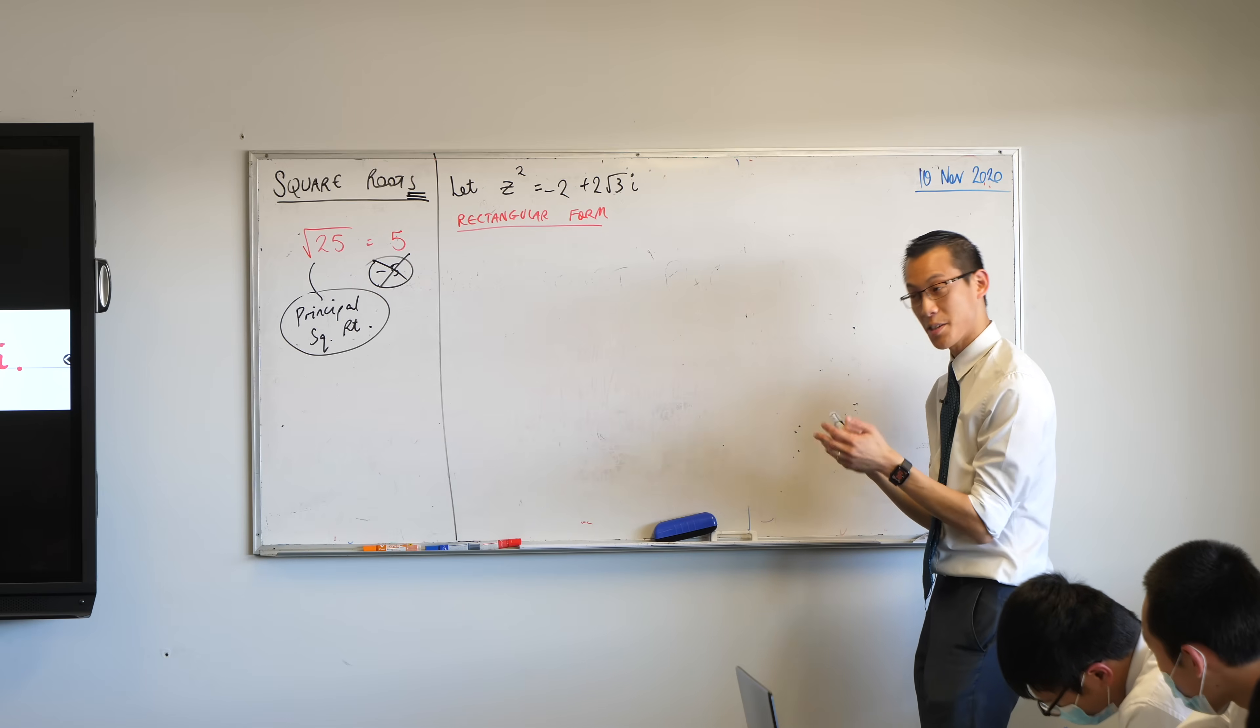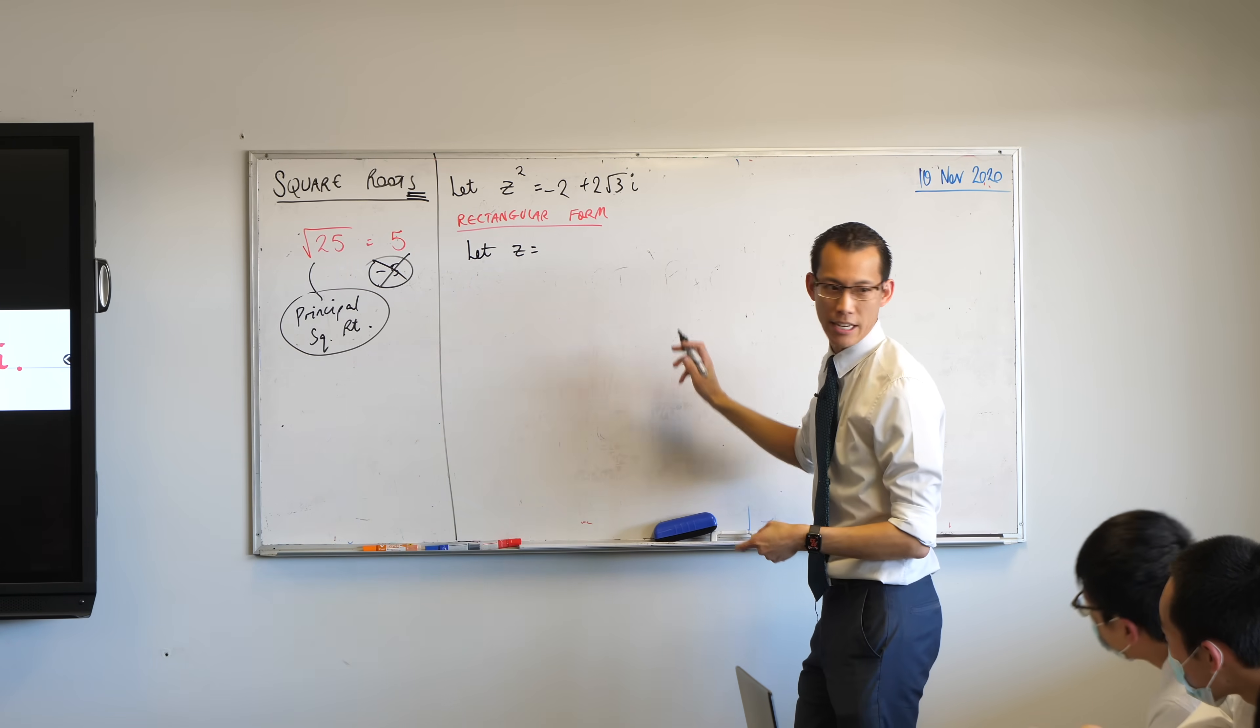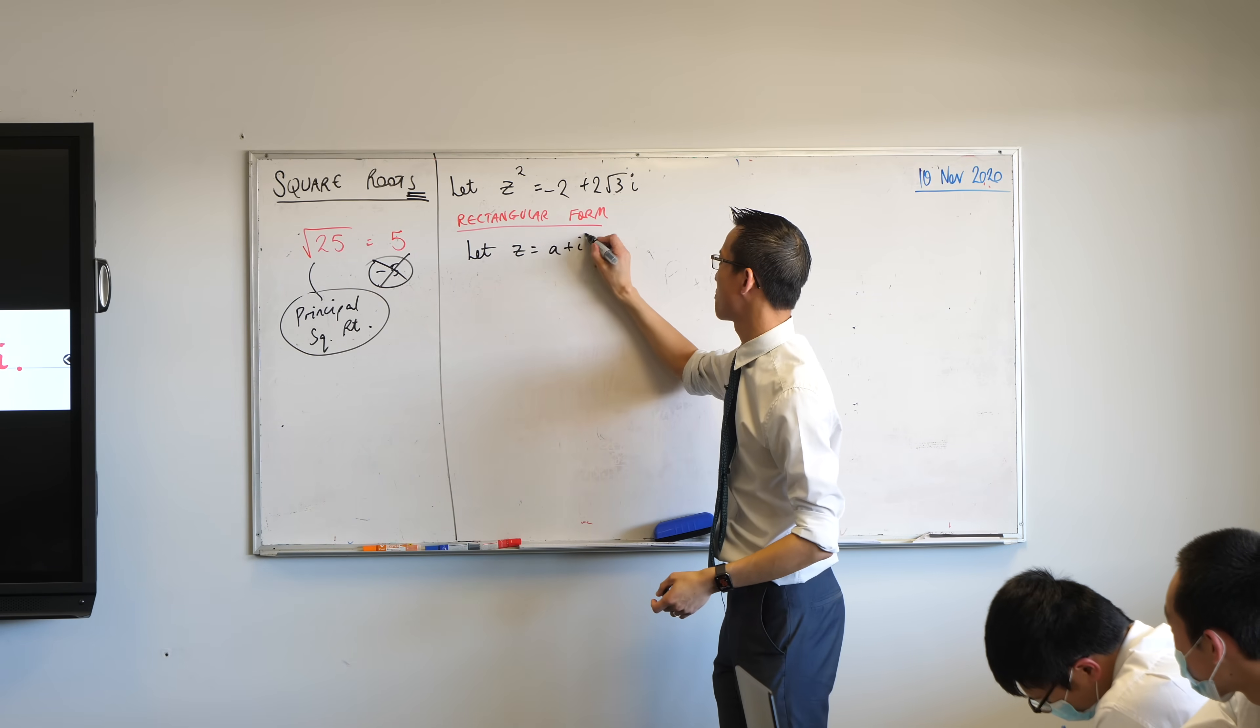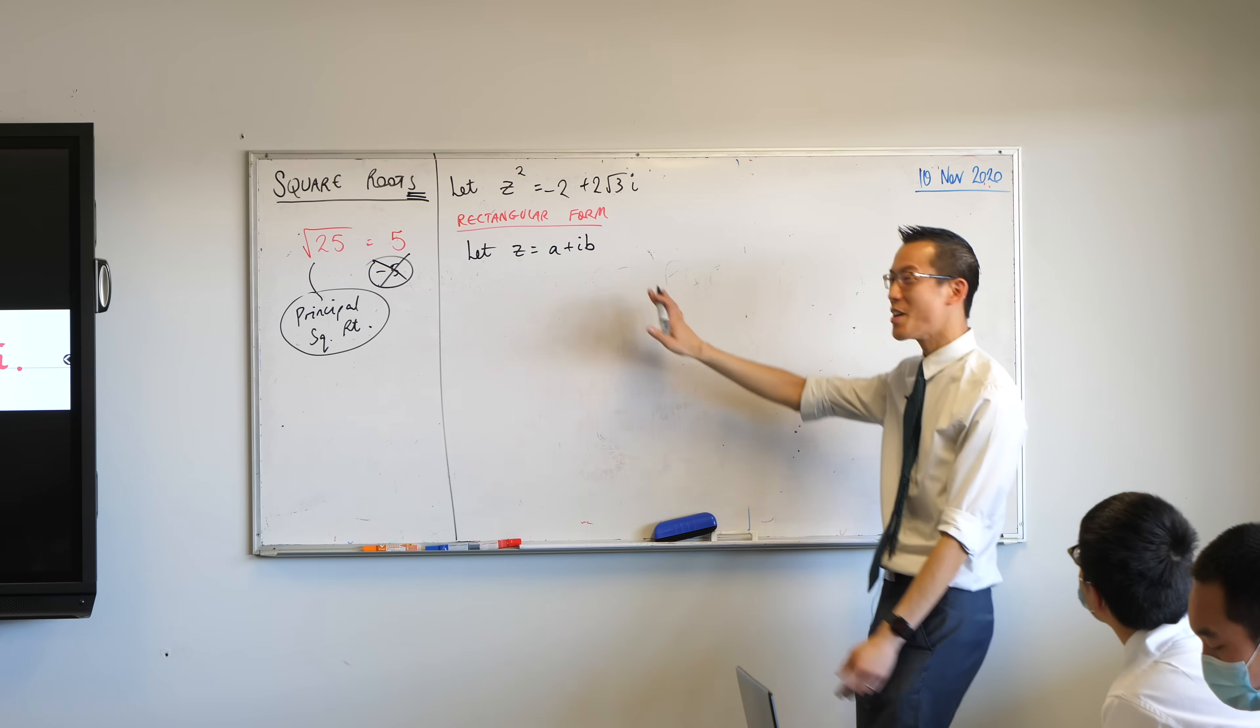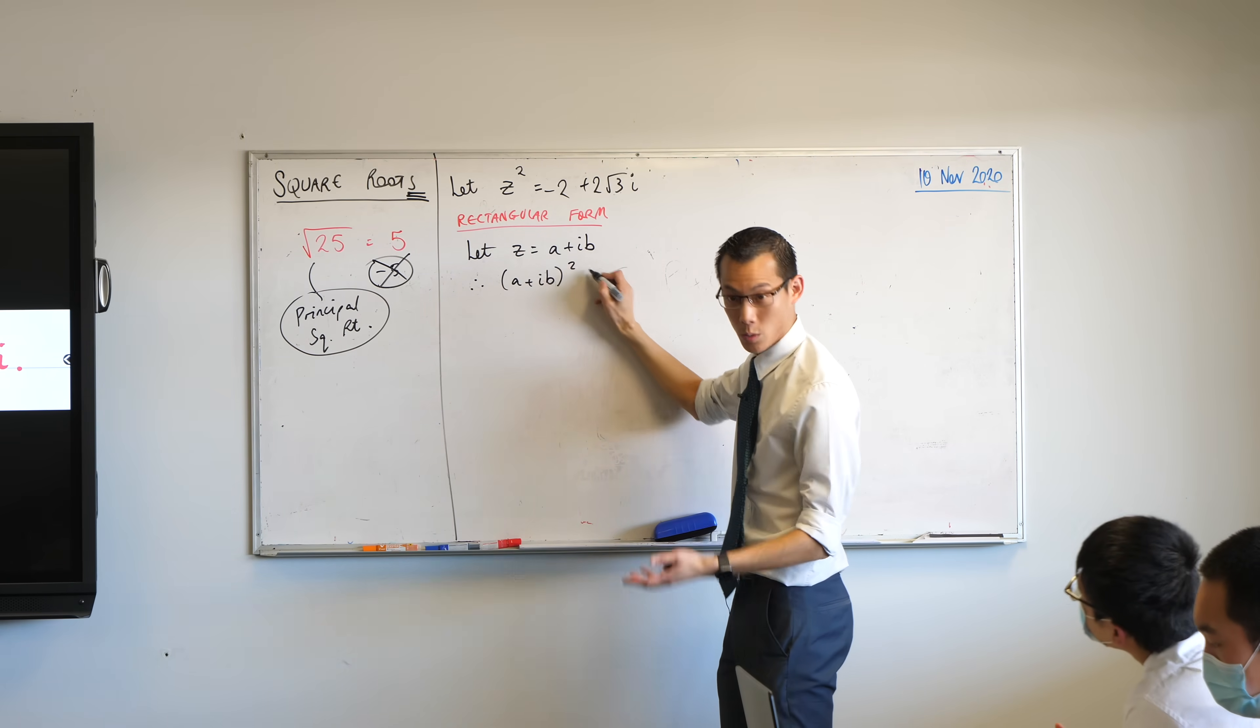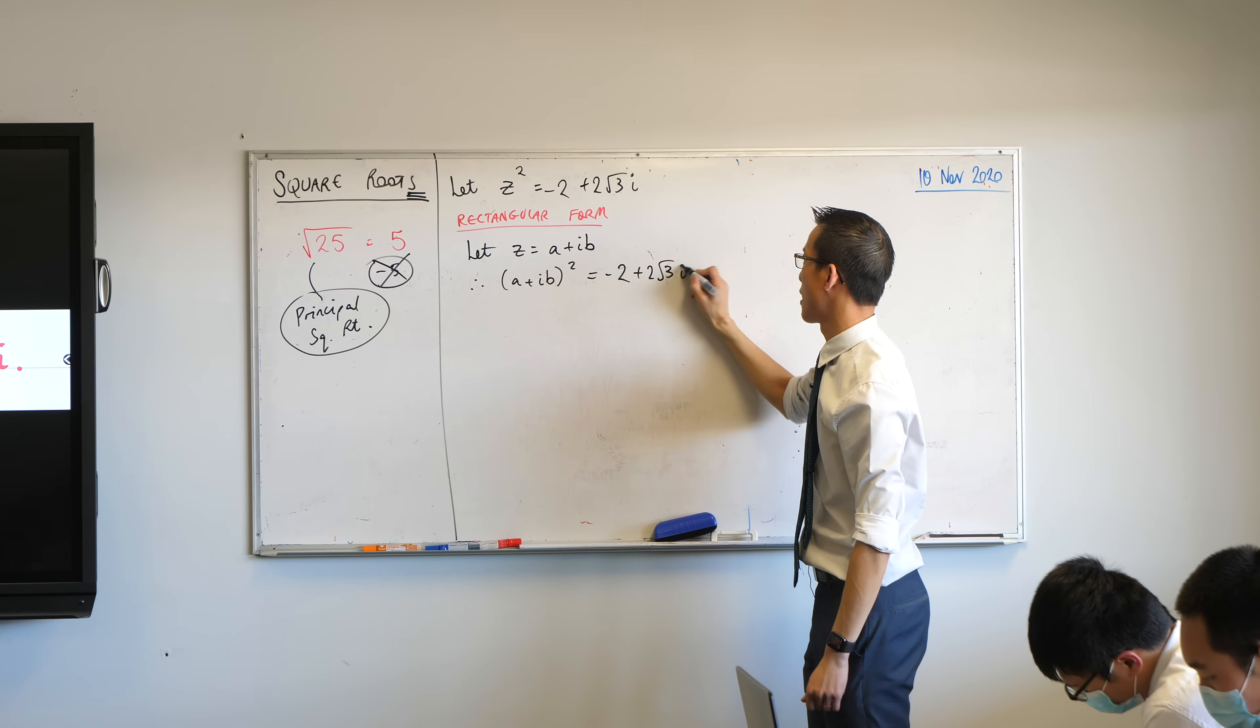If z is a complex number, I can write it in rectangular form like so. I can say let z equal, and because I don't know what its real or imaginary part are, I have to introduce some letters. What letters would you like? a plus ib will do it for me. So if that's what it is, well, I'm supposed to square this thing. So I'm going to say, therefore, a plus ib all squared equals whatever number I'm supposed to arrive at. Negative 2 plus 2 root 3i.